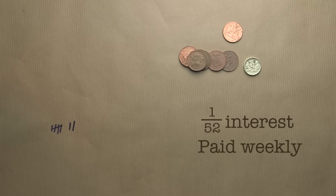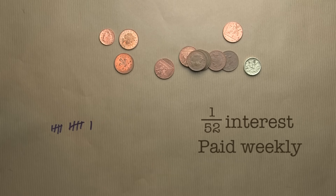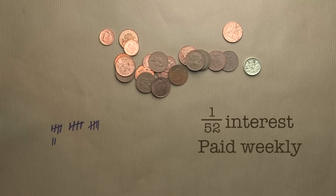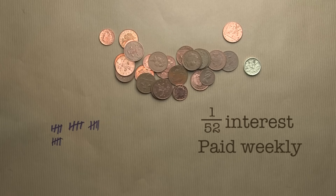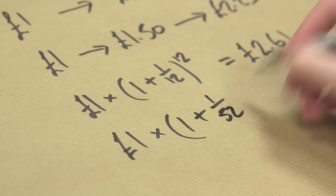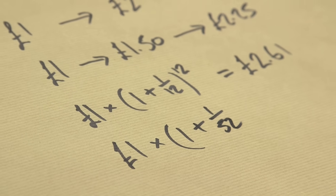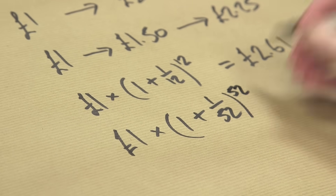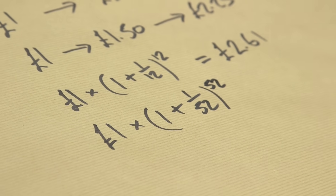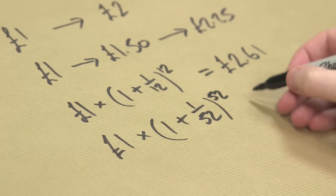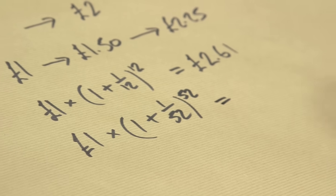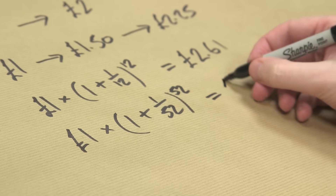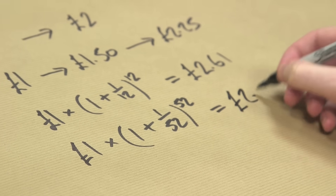Let's try every week. You're earning 1 over 52 interest every week, and then after the end of the year you've got 52 weeks, and you would have £2.69. So it's getting better and better and better.